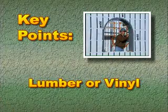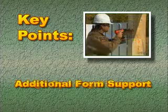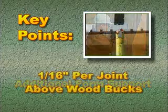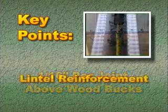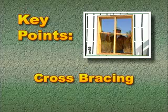Before we conclude this section, let's review some of the key points we've just covered. Door and window bucks are usually made either of lumber or vinyl. Use the rough opening dimension as a guide for sizing. Use tape or wood strapping for additional support where forms have been cut around openings. Allow 1/16th inch per joint space above wood bucks. Install lintel reinforcement as specified. Install sufficient cross-bracing. There are many variations on the basic door and window buck configurations — see your Arc's product manual for other options. When we come back, we'll look at wall alignment and service penetrations.